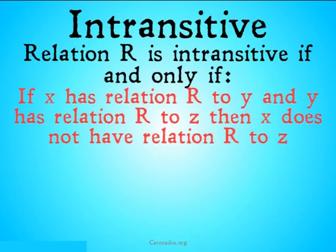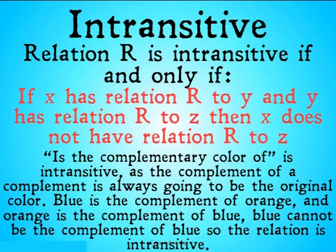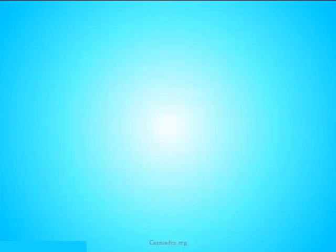Next up is intransitive. Relation R is intransitive if and only if: if X has relation R to Y and Y has relation R to Z, then X does not have relation R to Z. 'Is the complementary color of' is an example of an intransitive relationship, as the complement of a complement always goes back to the original color. Blue is the complement of orange, and orange is the complement of blue, but blue cannot be the complement of blue. Things like opposites also fall into this category of intransitive relationships.